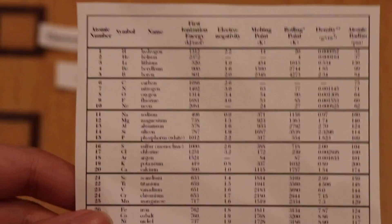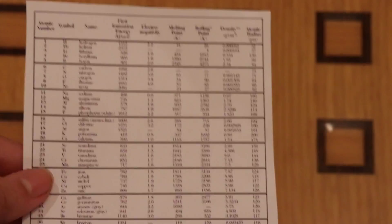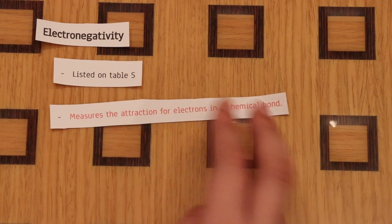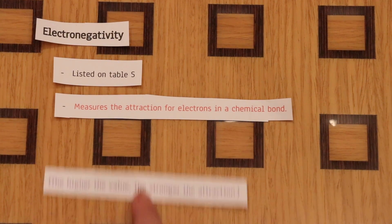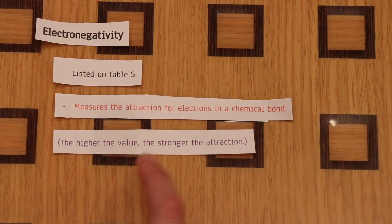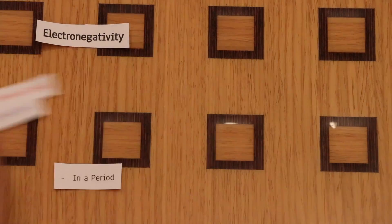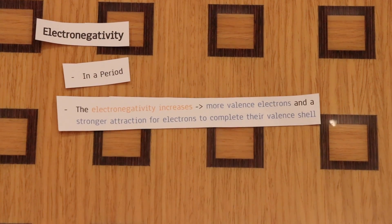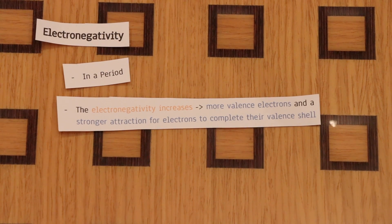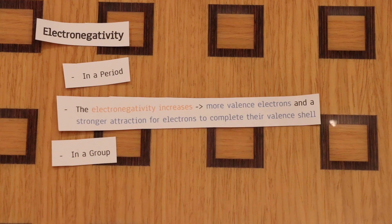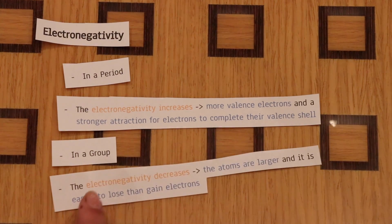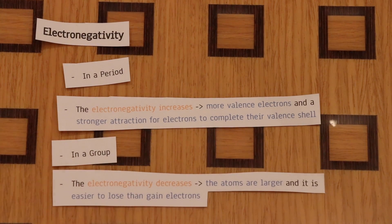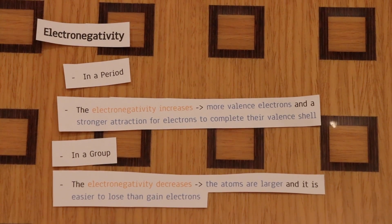Electronegativity is listed on Table S and measures the attraction for electrons in a chemical bond — the higher the value, the stronger the attraction. In a period, electronegativity increases because there are more valence electrons and a stronger attraction to complete the valence shell. In a group, electronegativity decreases because the atoms are larger and it's easier to lose than gain electrons.